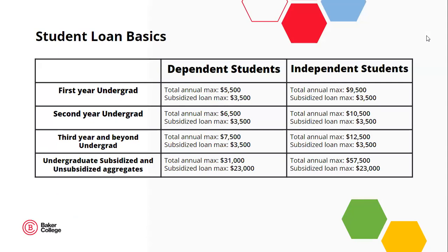The amount of money a student can borrow from a Federal Student Loan is capped each academic year. Dependent freshmen are capped at $5,500 for the year, while independent freshmen are capped at $9,500 to help with more living expenses. Both dollar amounts increase slightly as the student progresses through their education. In total, a dependent student can borrow no more than $31,000 and an independent student can borrow no more than $57,500. We will get into more detail on who is dependent and who is independent when we discuss the FAFSA.